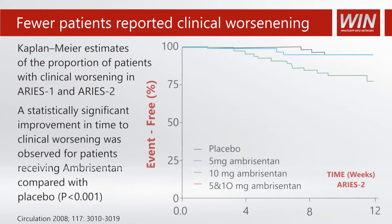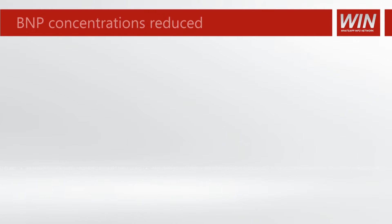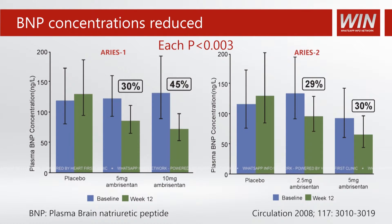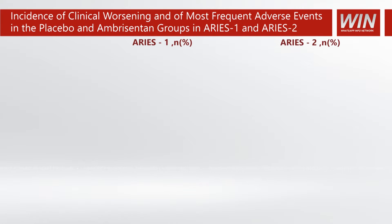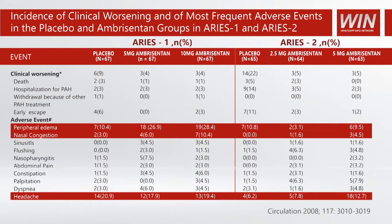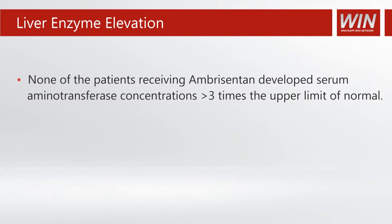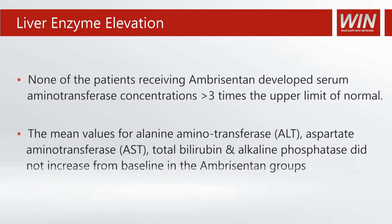Not only is there improvement in walking distance, but fewer patients report clinical worsening in both ARIES-1 and ARIES-2 trials. BNP concentrations are reduced by a magnitude of 30 to 45%. The common side effects include nasal congestion and peripheral edema. One of the greatest advantages of ambrisentan over bosentan is that it does not cause liver enzyme elevation or hepatic dysfunction, and therefore rarely needs to be discontinued because of side effects.